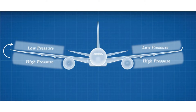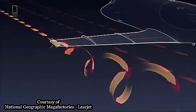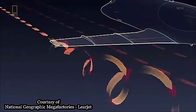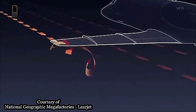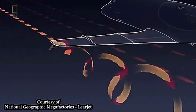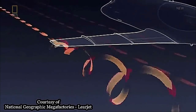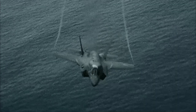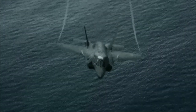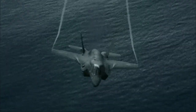We know air likes to move from high pressure to low pressure. So the air below the wing wants to move up and mix with the air at the upper surface. As a result, the flow near the wing tips tends to curl up, being forced from the higher pressure region just underneath the tips to the low pressure region on top. This leads to the formation of wing tip vortices — which appear like two smoky lines.